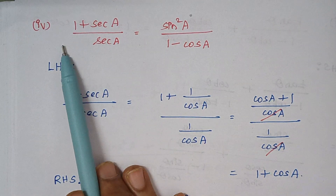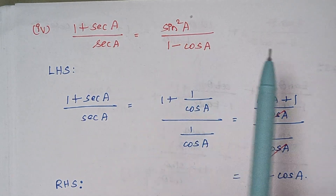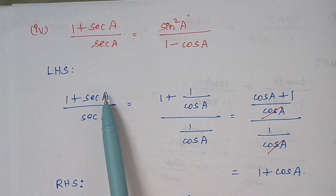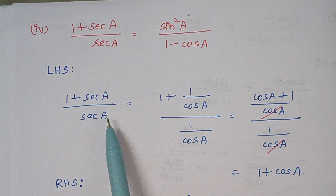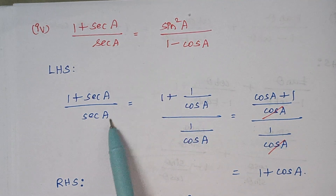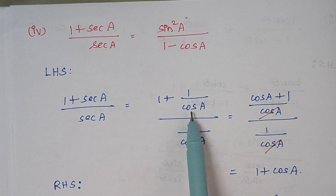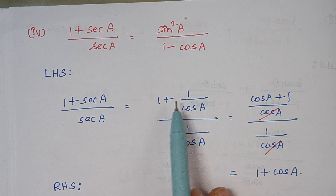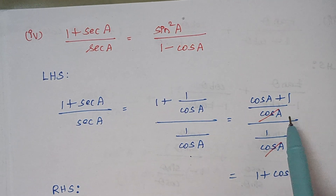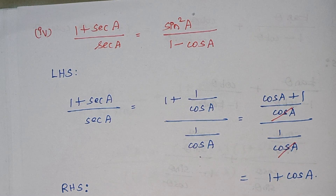Now our fourth part of problem number 5: 1 plus secant a by secant a, equal to sin square a by 1 minus cos a. In this case we take both LHS and RHS. Starting with LHS: 1 plus secant a by secant a — secant a is written as 1 by cos a, so we take LCM. 1 into cos a becomes cos a, plus 1, the whole divided by cos a, over 1 by cos a. The two cos a terms cancel, giving 1 plus cos a.